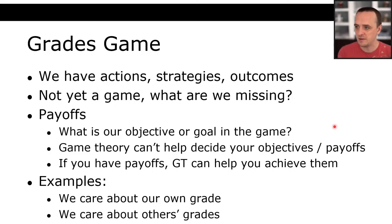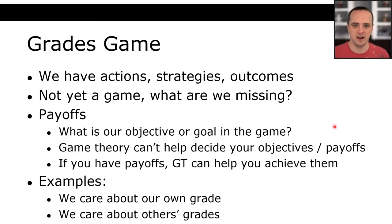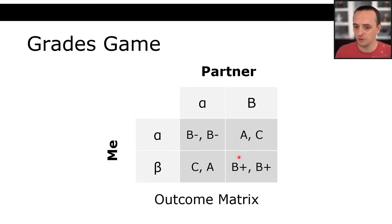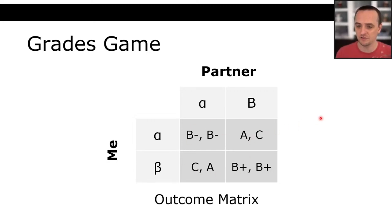These are just arbitrary numbers where a higher grade equals a higher number. These numerical values are called utility. Utility is a game-theoretic term for how much you want something — how much value it adds to your life. Players should attempt to maximize utility. In this greedy example: B minus is 0, A is 3, C is negative 1, B plus is 1. We've just picked numbers with the intuition that higher grades mean higher utility.